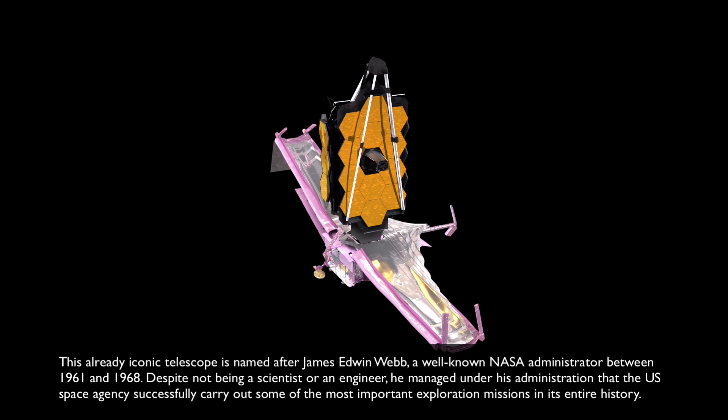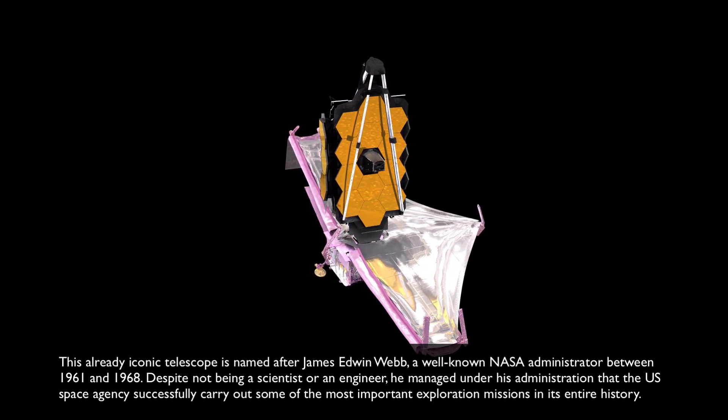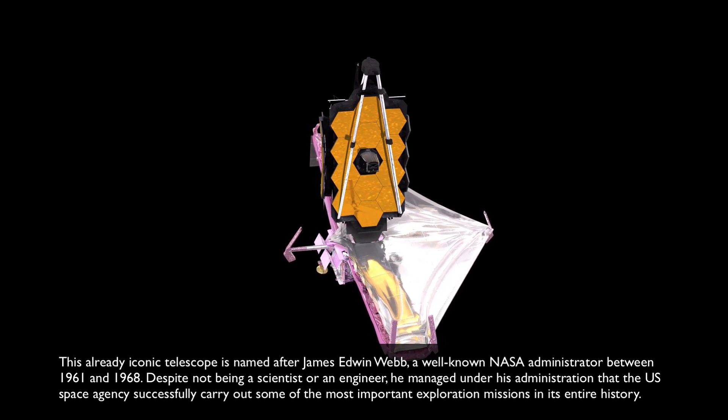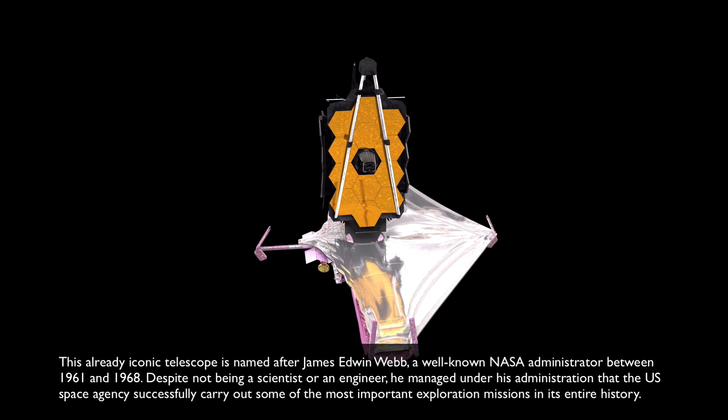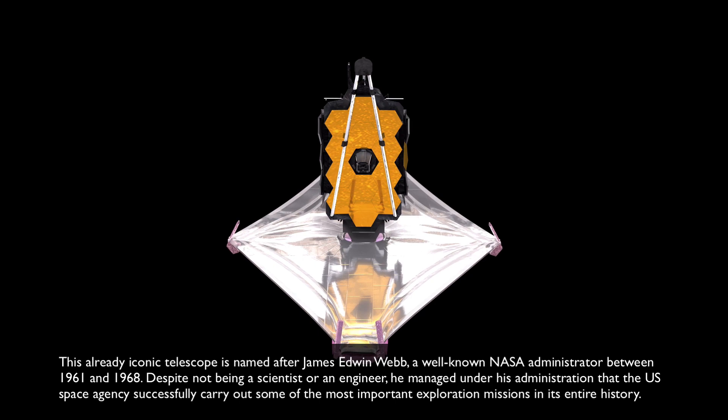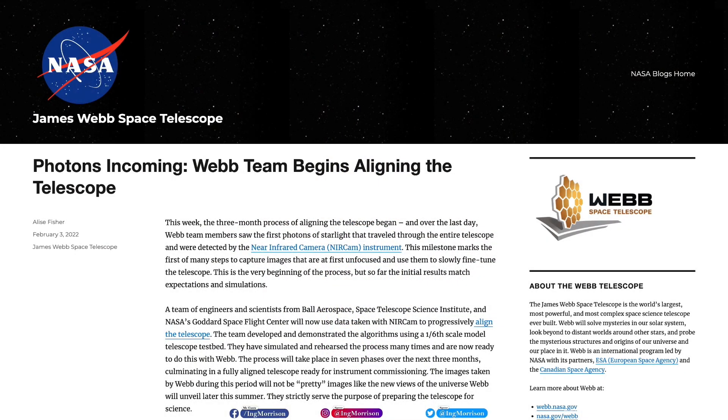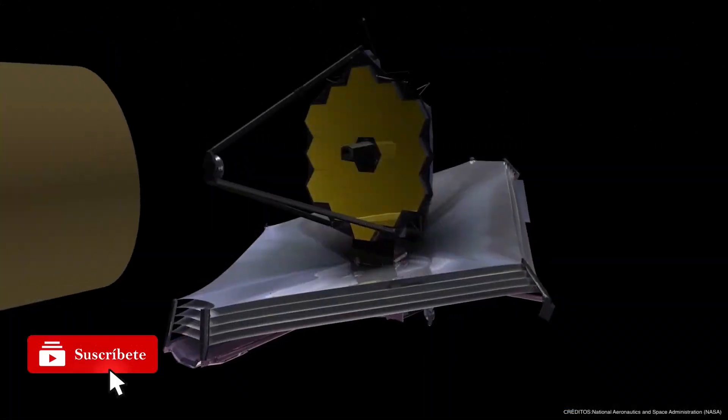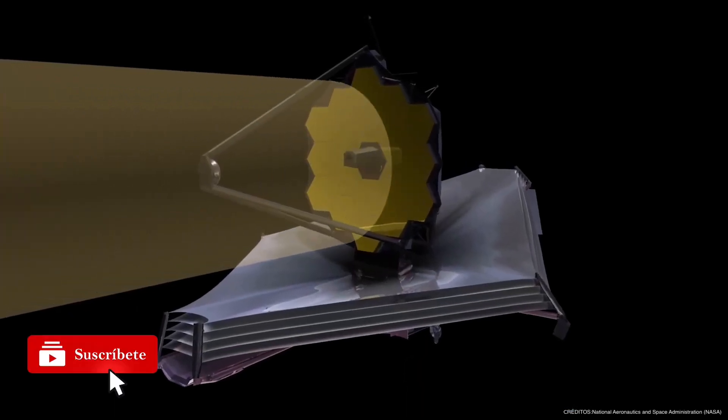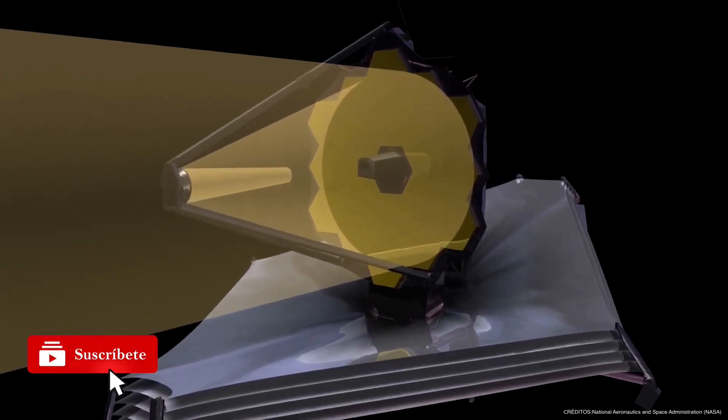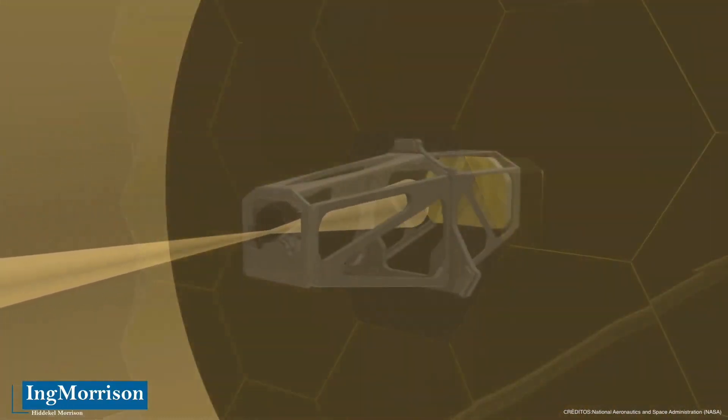This already iconic telescope is named after James Edwin Webb, a well-known NASA administrator between 1961 and 1968. Despite not being a scientist or an engineer, he managed under his administration that the U.S. space agency successfully carry out some of the most important exploration missions in its entire history. NASA began with the alignment of the James Webb Space Telescope and its camera was able to capture the first photons of light from a distant star that passed through its mirrors, to be detected by the near-infrared camera, which means that it reached the first milestone of a three-month-long alignment process that will allow humanity to see farther into space and further back in time than ever before.